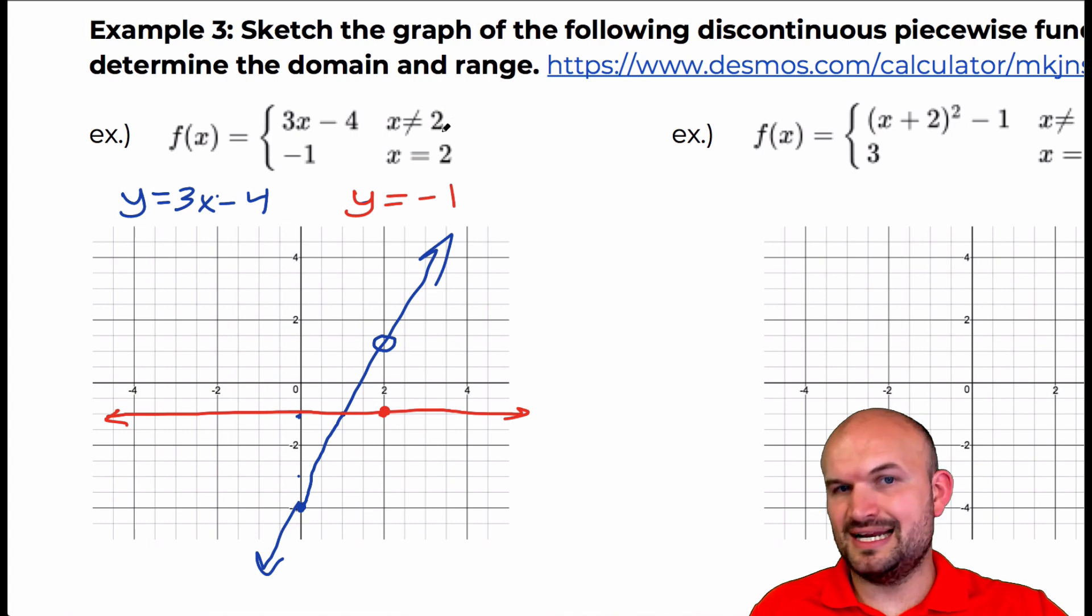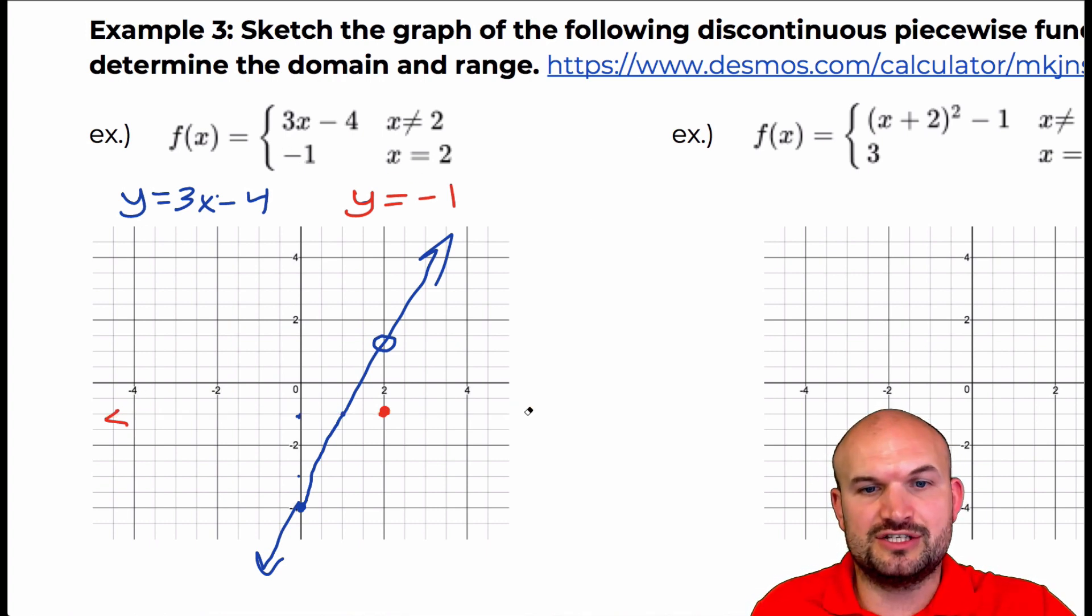So what's happening here is it says for 3x minus 4, x cannot equal 2. So therefore there's a hole when x equals 2. However, for this one, this graph is only true when x equals 2. So the rest of this graph, I actually can just erase, because it's only true here when x is equal to 2. Therefore you can see that this is a piecewise function where we have a hole at 2, but we also have a defined portion of that.